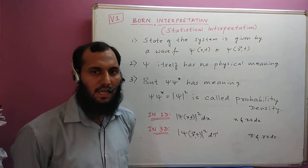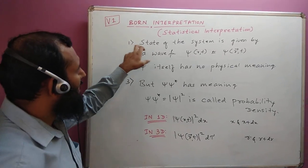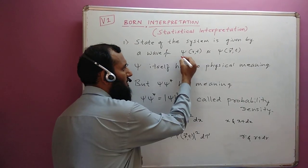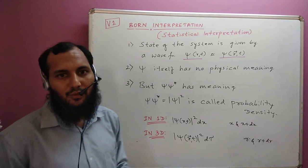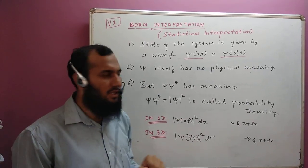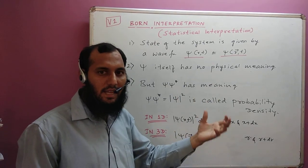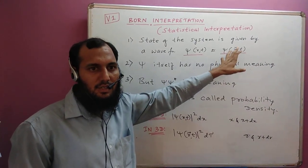This was given by physicist Max Born. It says the state of the system is given by a wave function which is ψ(x,t) or ψ(r,t). If the wave function is moving in one dimension, then we use ψ(x,t). Or if it is moving in three dimensions, we use ψ(r,t), where ψ is a function of the radial vector r and time.